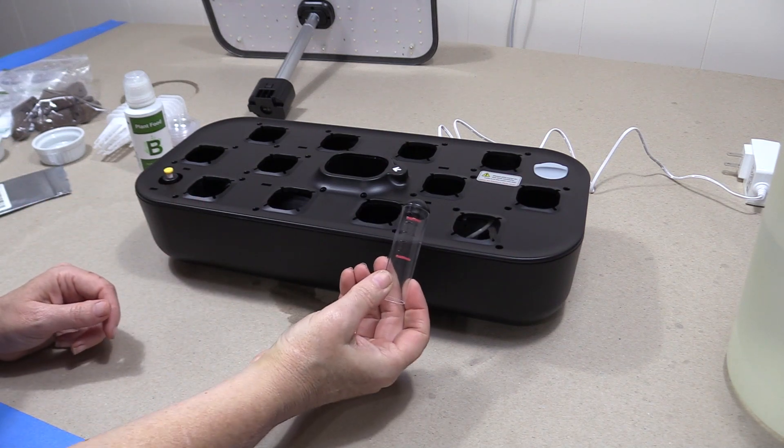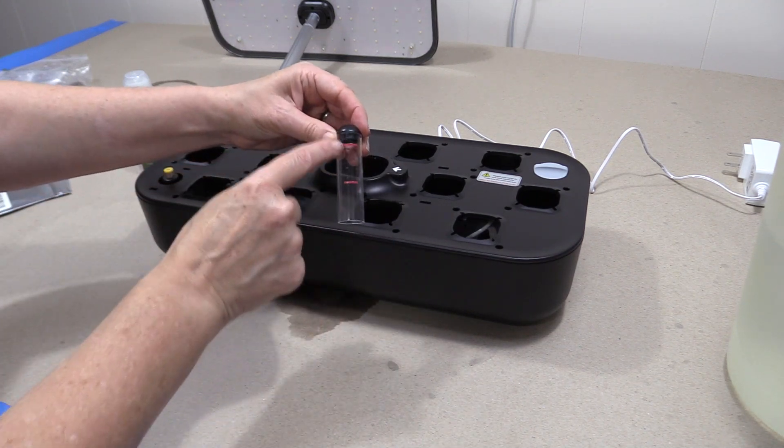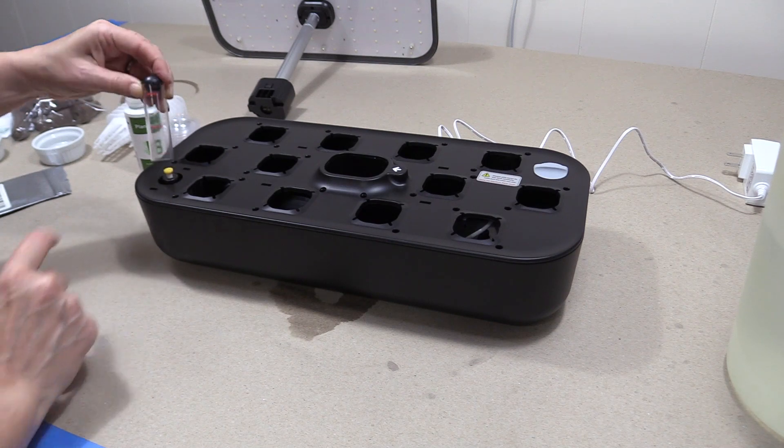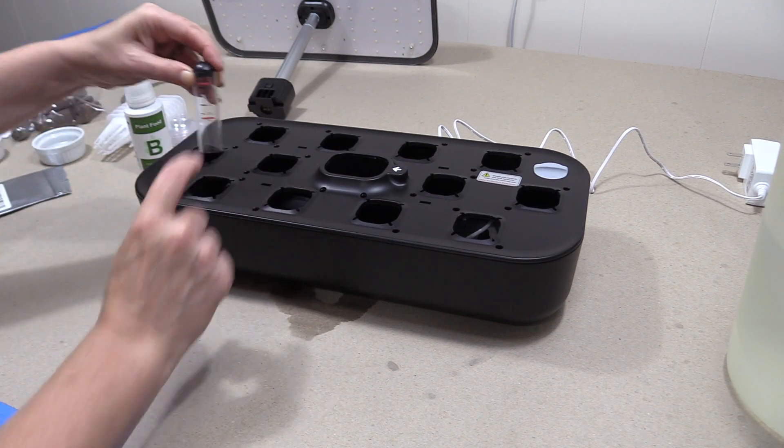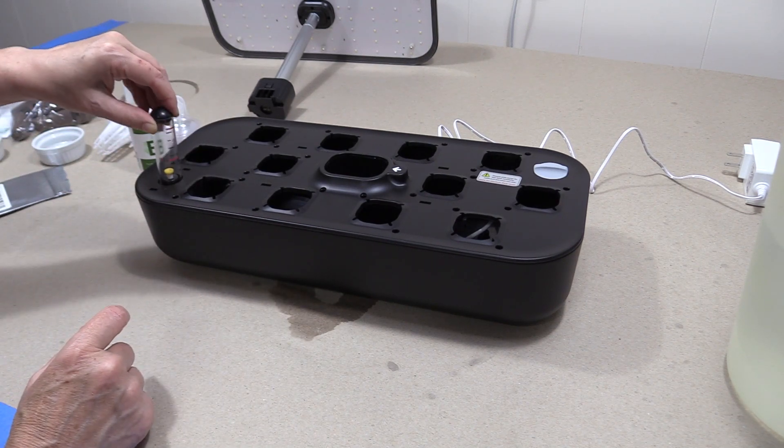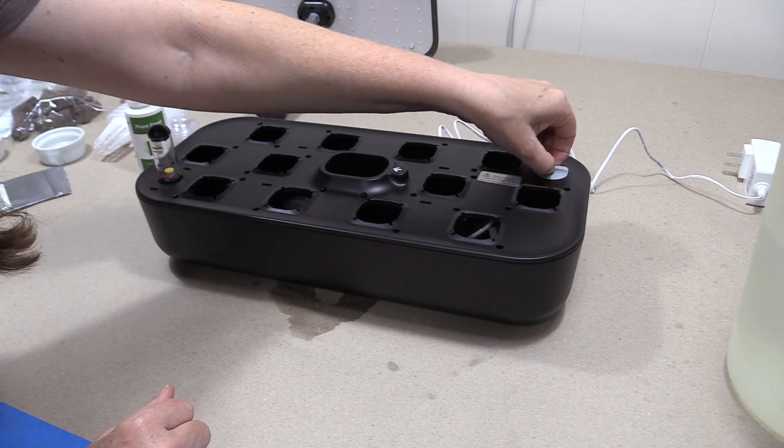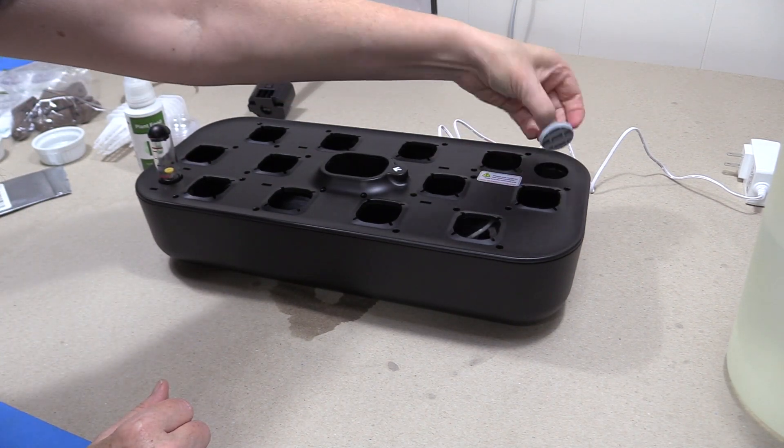We're going to take our fill meter and we're going to place it on top over here. This is the minimum. That's the maximum. It just slides down. Then we have a rubber stopper in the back corner. We're going to pull that out.